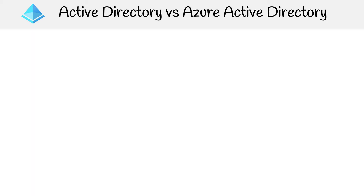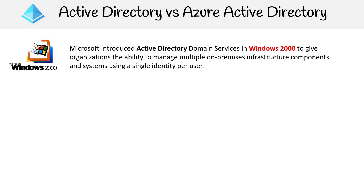Active Directory existed way before Azure, so let's do a quick rundown of the history so we have an idea of what we're looking at. Microsoft introduced Active Directory Domain Services in Windows 2000 to give organizations the ability to manage multiple on-premise infrastructure components and systems using a single identity per user. It's been around for 20 years.